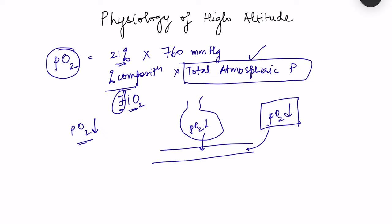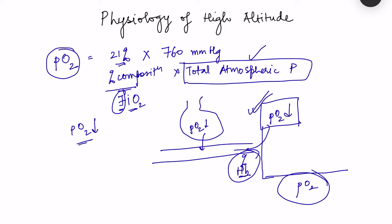Oxygen content depends on the partial pressure of oxygen and the amount of oxygen bound to hemoglobin. On the oxyhemoglobin dissociation curve, the x-axis shows partial pressure of oxygen and the y-axis shows percentage hemoglobin saturation. Hemoglobin saturation is directly dependent on partial pressure of oxygen, so when partial pressure of oxygen decreases, less oxygen is bound to hemoglobin, and total oxygen content falls in the blood.